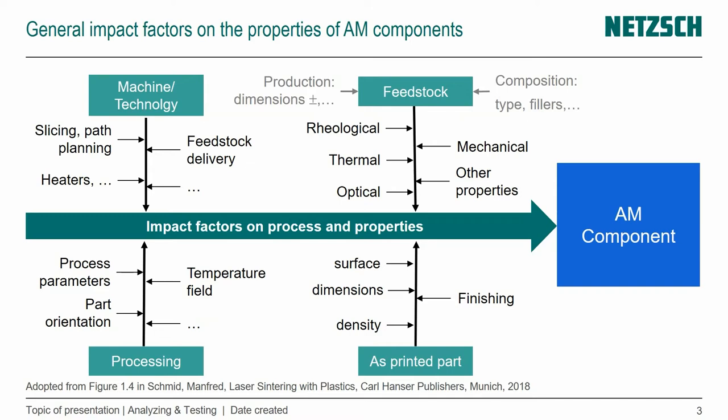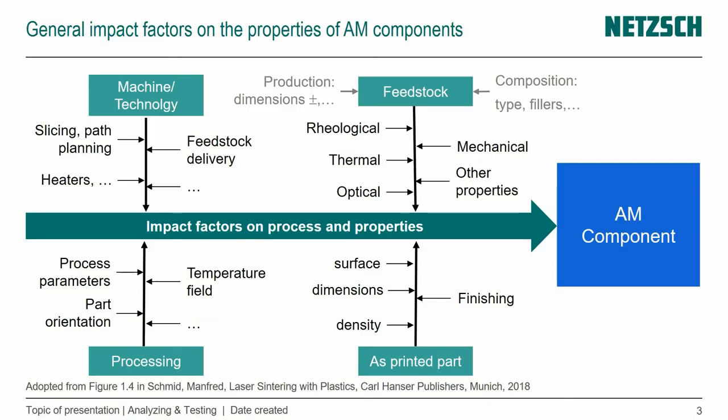For example, the impact factor machine and technology is definitely still the feedstock delivery. So for example, if you have a Bowden style machine where the filament is actually conveyed and fed much further away from the nozzle than other styles, then the slicing itself, the layer height, the pass planning — when do we return to a certain location — is important. The heaters and the position of the thermocouple in the heaters changes what we set as a temperature and what we achieve as a temperature — very important.